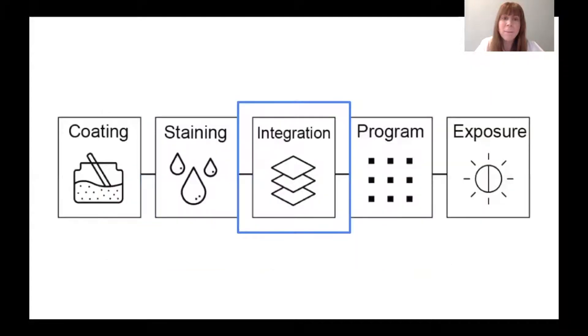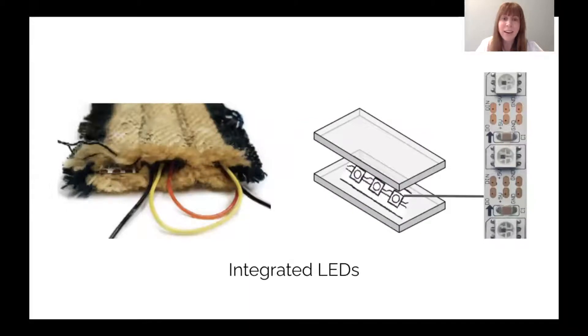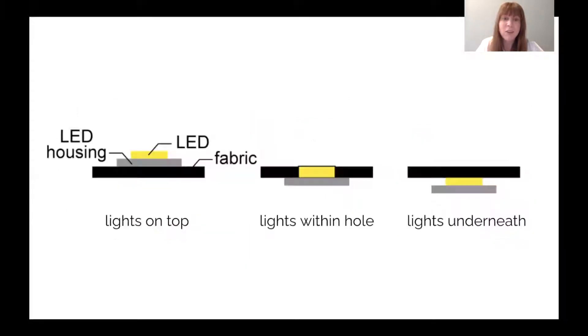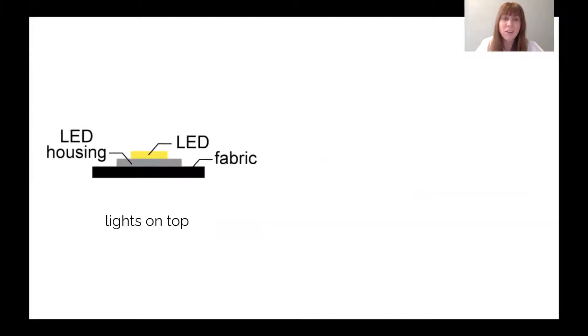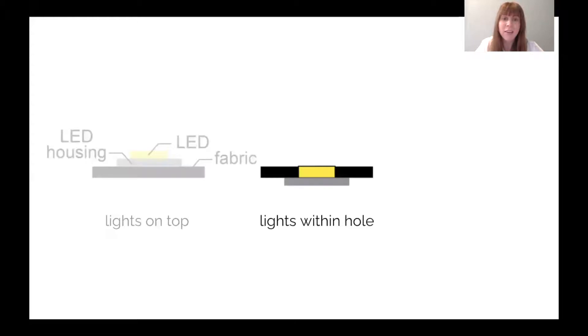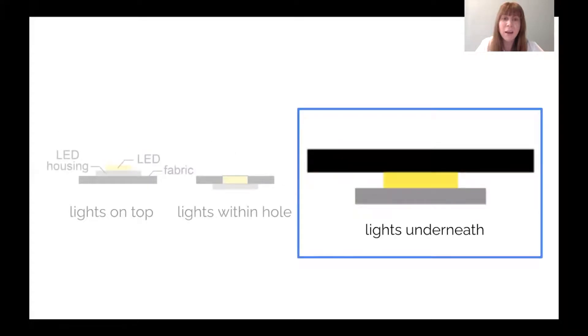We then embedded programmable LEDs by placing them inside the textile's pockets. To make this decision, we explored three possible embedding options: the LED on top of the textile, the LED within a cut hole, and the LED underneath the textile. Our measurements indicated that embedding the LED underneath the textile provided the best light intensity for de-staining.